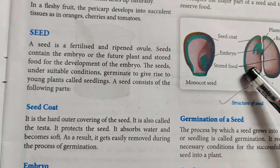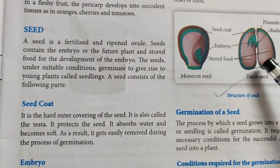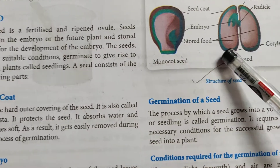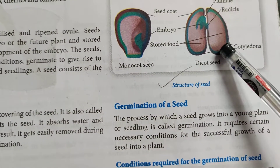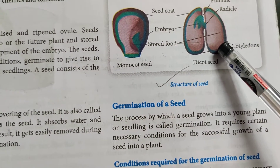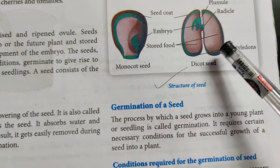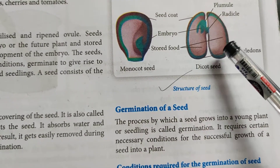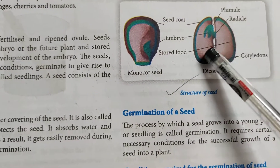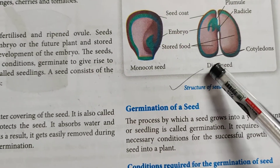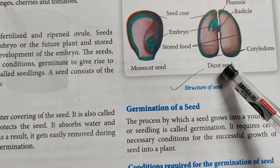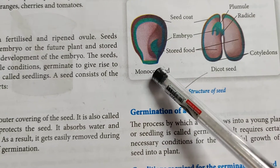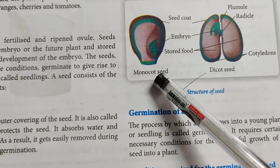The cotyledons are special structures in the seed that surround the embryo. They are also called seed leaves. Certain seeds have two cotyledons, so they are called dicot seeds. Certain seeds have only one cotyledon, so they are called monocot seeds.